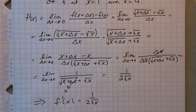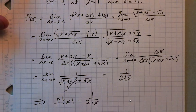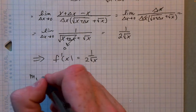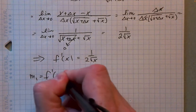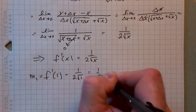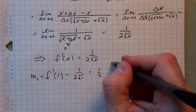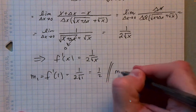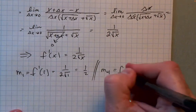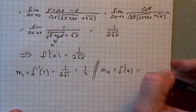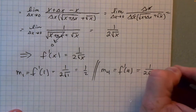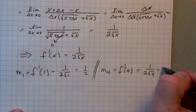Now I can find the slopes. The first slope at x equals 1 is f prime of 1, which is 1 over 2 times the square root of 1, which is one-half. The other slope at x equals 4 is f prime of 4, which is 1 over 2 times the square root of 4, which is one-fourth.